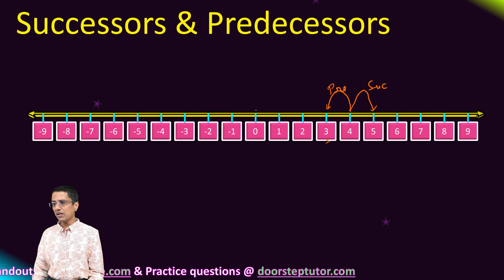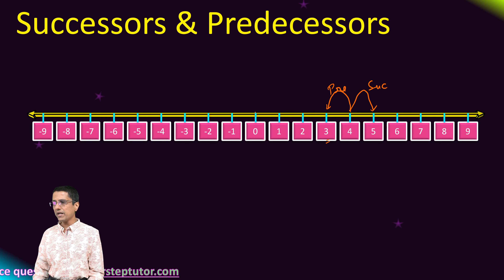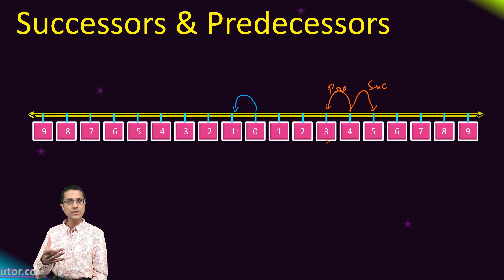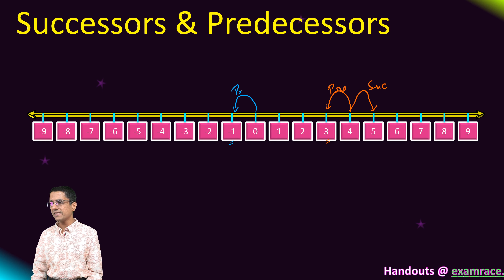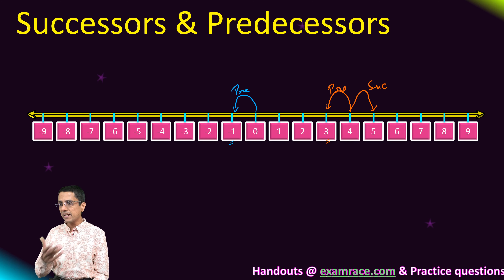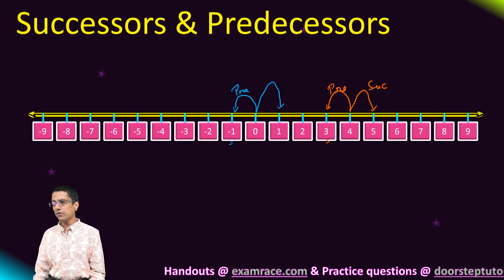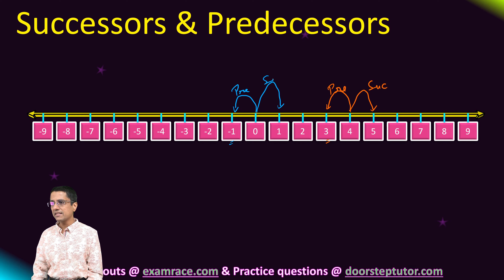Now let's consider the number 0. If I go one number to the left of number 0, I encounter minus 1. This is the predecessor of 0. If I go one number to the right of number 0, I encounter 1, which is the successor.